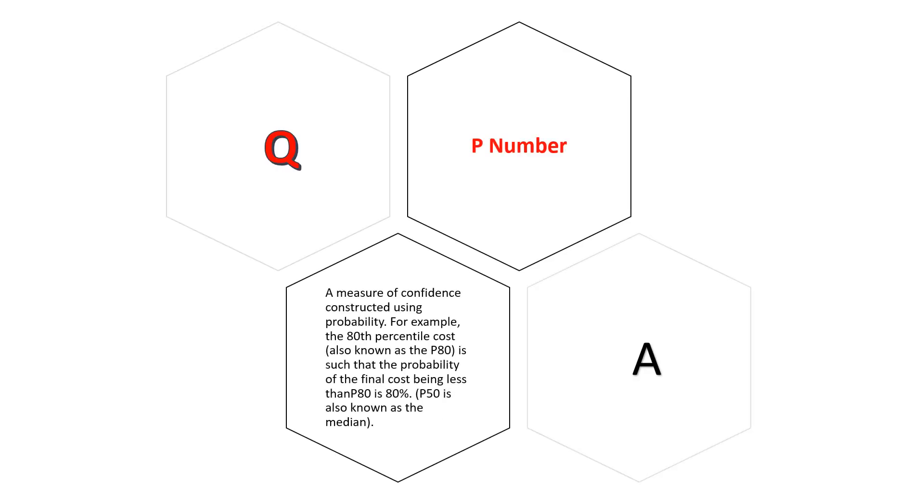P number: A measure of confidence constructed using probability. For example, the 80th percentile cost is such that the probability of the final cost being less than P80 is 80%.